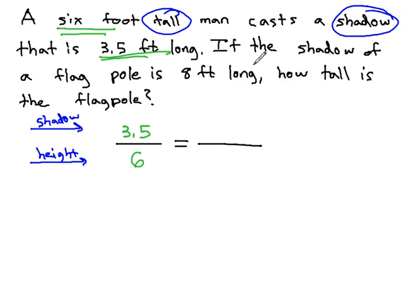Now, we look at the other number, the 8 feet, and try and decide is that a shadow, or is it a height? Well, clearly it says that it's the shadow of the flagpole is 8 feet, so we'll put the 8 on top with the shadow, and our unknown, our variable x, goes in the denominator for the height of the flagpole.